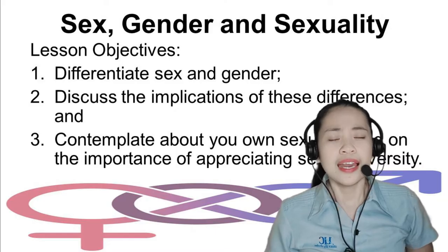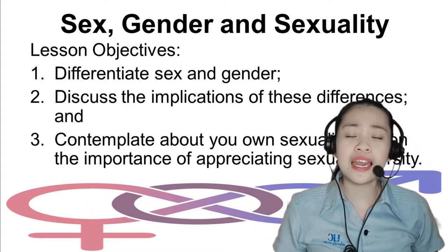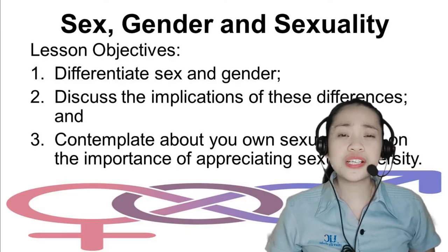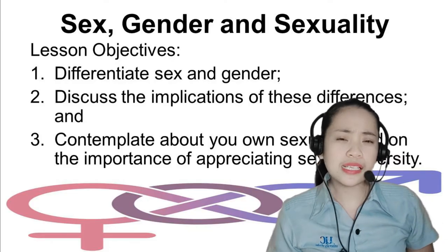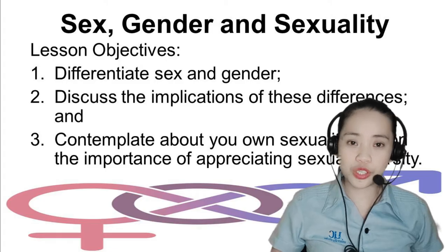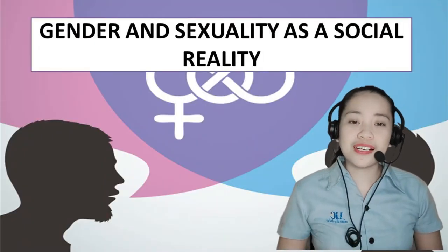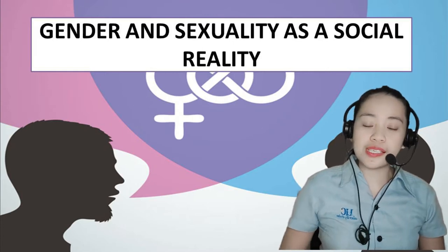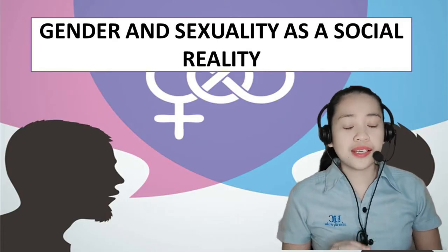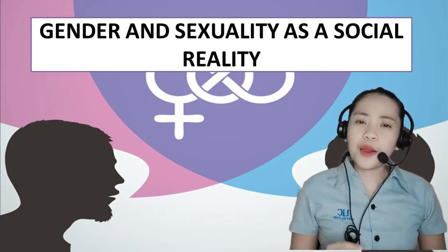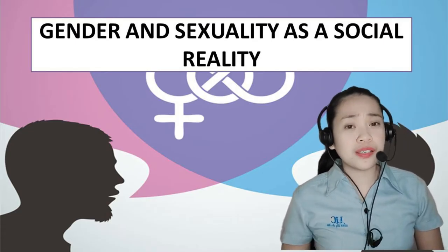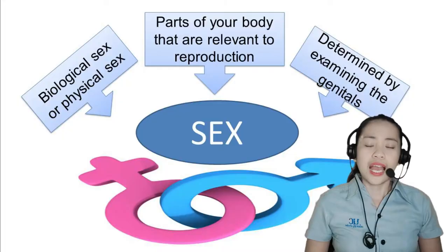First, you need to understand the complexities of defining and differentiating sex, gender, and sexuality. Having a clear grasp of these concepts is crucial since we will be using these terms over and over again in the succeeding discussions. Moreover, as we start our discussion of gender and sexuality as social realities, we also want to understand how a person's gender is expressed from birth to adulthood. Our ultimate goal is to foster understanding of the diversity of how humans experience and express their sexuality.